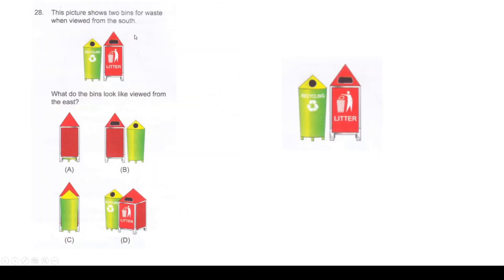This picture shows 2 bins for waste when viewed from the south. What do the bins look like if viewed from the east? South is this direction. If south is this, on your left-hand side would be east and right-hand side would be west. We need to look at it from the east direction. From the east direction, the green bin will be in front of the red bin, which is option C.